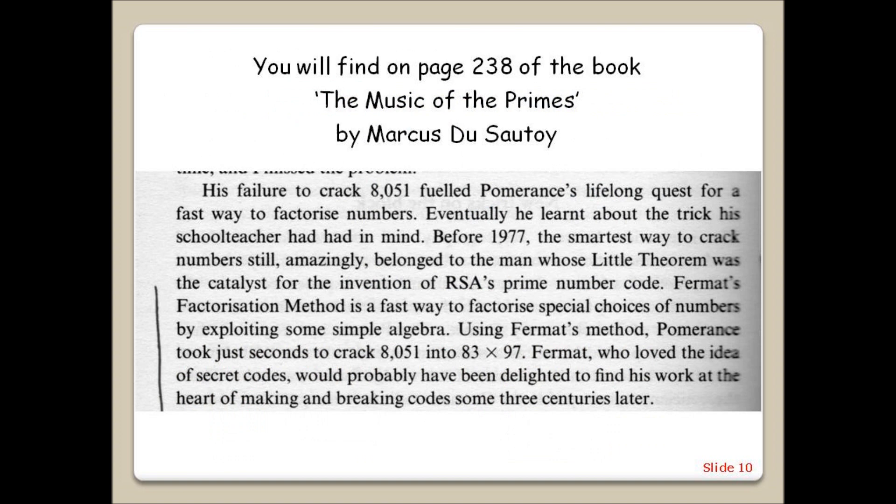You will find on page 238 of the book The Music of the Primes by Marcus du Sautoy the following paragraph. His failure to crack 8051 fueled Pomerance's lifelong quest for a fast way to factorise numbers. Eventually, he learnt about the trick his school teacher had had in mind. Before 1977, the smartest way to crack numbers still, amazingly, belonged to the man whose Little Theorem was the catalyst for the invention of RSA's prime number cone.